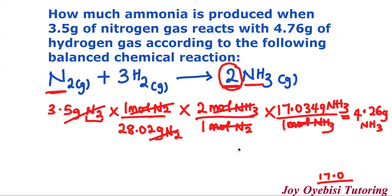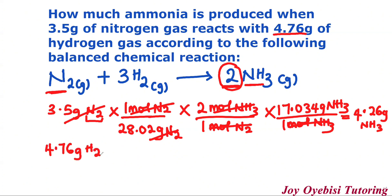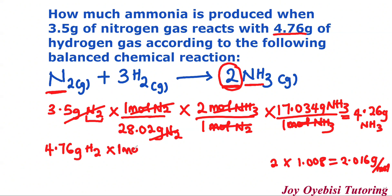The next thing we do is calculate the mass of ammonia using the other value. So we have 4.76 grams of hydrogen this time. We need the molar mass of hydrogen: 1.008 multiplied by two (since it's diatomic) gives us 2.016 grams per mole. Again, we want the moles, so we put one mole on top and 2.016 grams under. The grams cancel out, and we go ahead to apply the stoichiometric relationship.